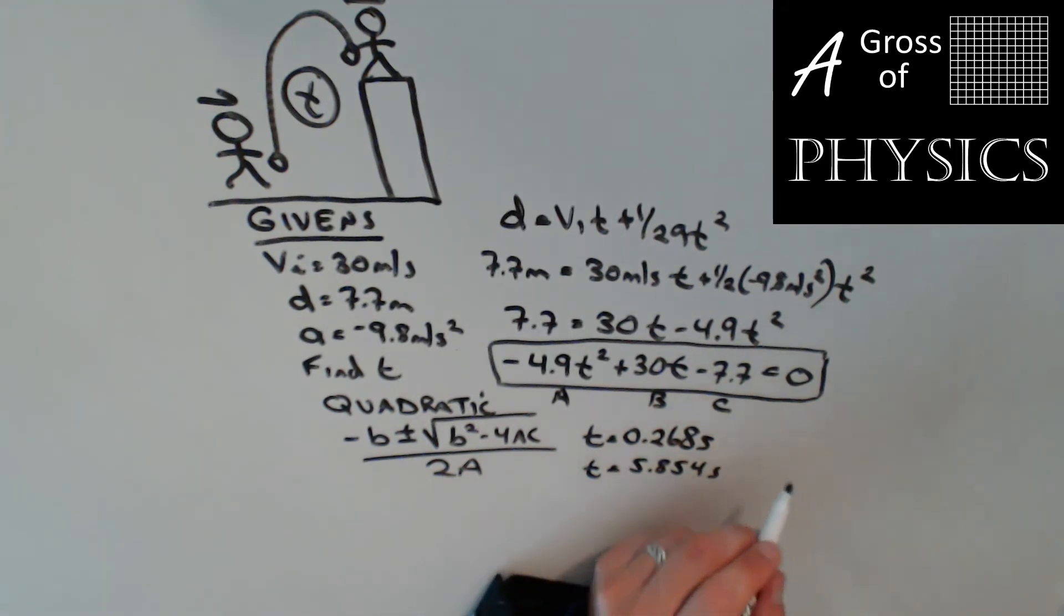Now why would we have two different answers? The reason is because when the ball was released and moved its way up, it was at the height we were looking at, which was 7.7 meters, twice: on the way up and on the way down.